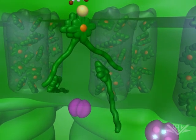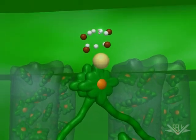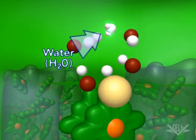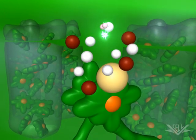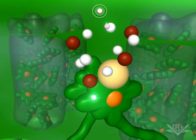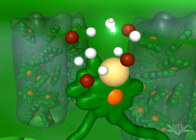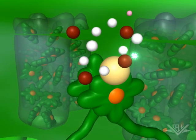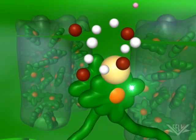The two electrons lost from photosystem II are replaced by the splitting of water molecules. Water splitting also releases hydrogen ions into the lumen. This contributes to a hydrogen ion gradient, similar to the one created by mitochondrial electron transport.